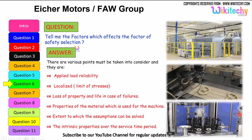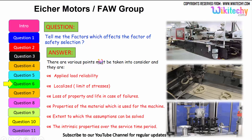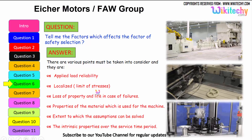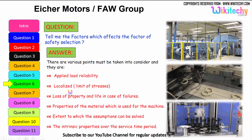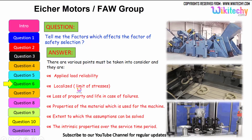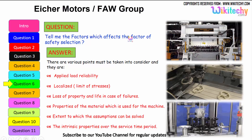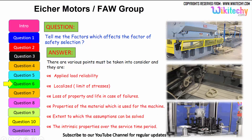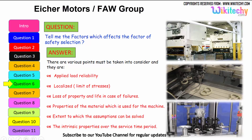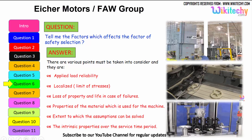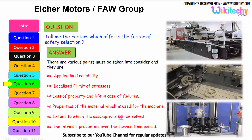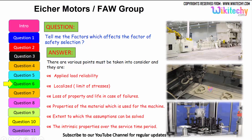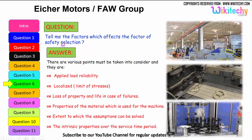Let us see the factors which affect the factor of safety selection. Here are some of the factors: applied load reliability; limit of stresses thus localized; loss of property and life in case of failures — this is a very important factor. Also, the properties of the material used for the machine — what kind of material you are using. The extent to which the assumptions can be solved, how much it will extend or compress. The intrinsic property over the service time period — how it will sustain everything — all need to be considered for factor of safety selection.